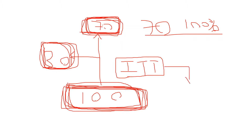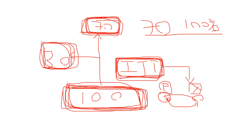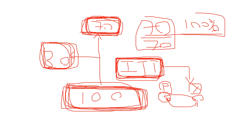Intention to treat can seem counterintuitive. For example, if you have one group taking a placebo and one group taking drug X, and one person switches groups during the study, you still analyze them as if they were taking the placebo — even though they're currently taking drug X. You cannot say 70 out of 70 had good results and claim a 100% success rate. You have to analyze the whole group.